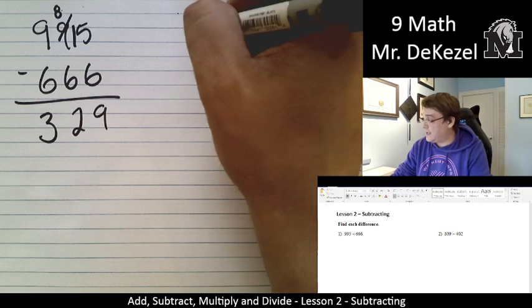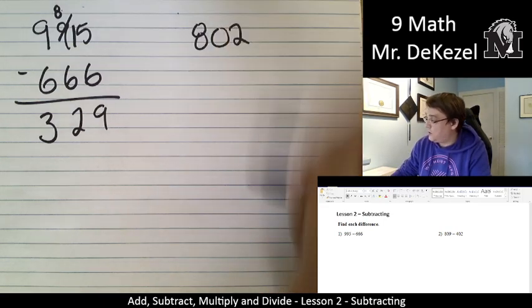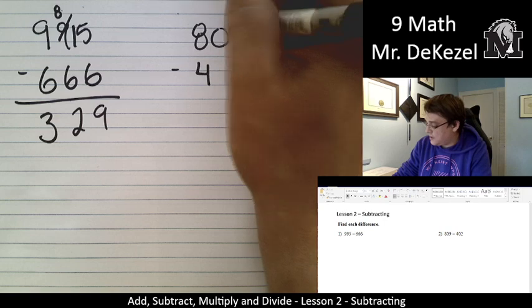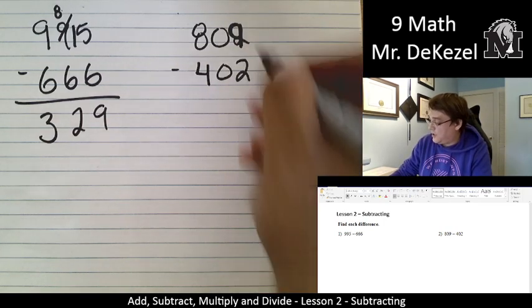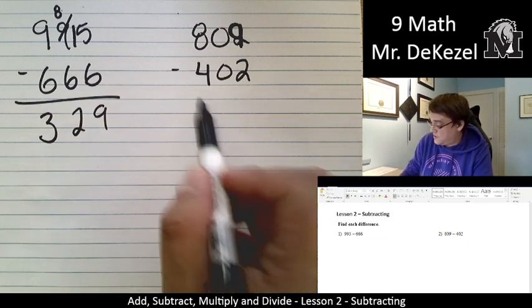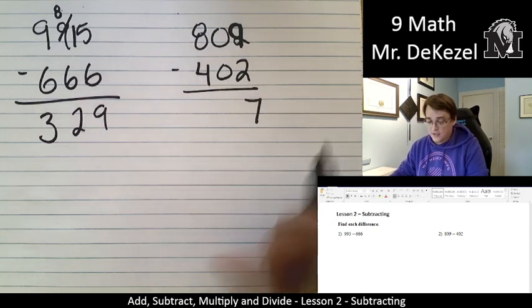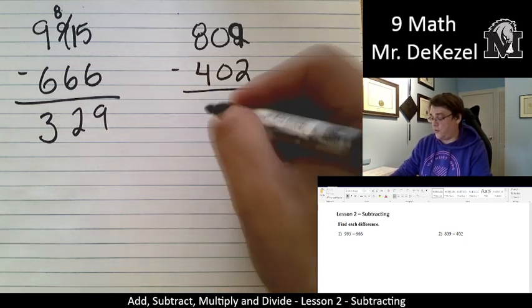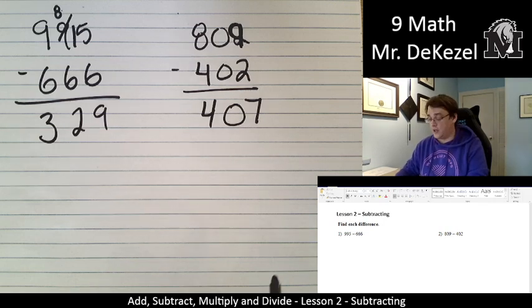Let's go to the next problem. Number two to the right. We have 802 subtract 402. Nine minus two is seven. Zero minus zero is zero. That's nice and easy. And eight minus four is four. All right. So the answer is 407.